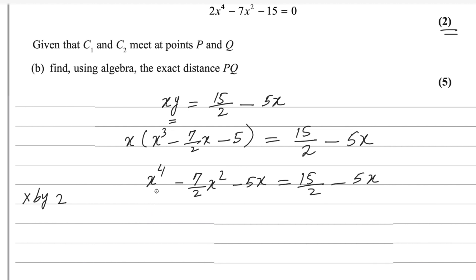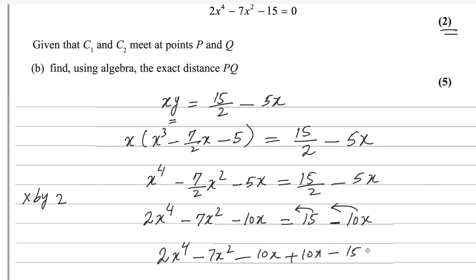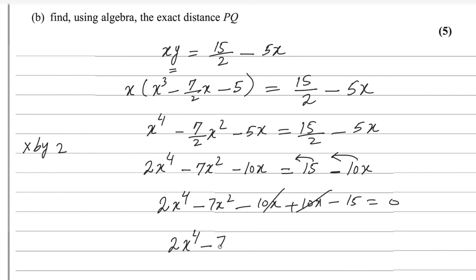Multiply every term by 2. We get 2X⁴; the 2 cancels with the denominator leaving minus 7X²; and minus 5X times 2 gives minus 10X. On the right side, 2 cancels with 2 giving 15, and minus 5X times 2 gives minus 10X. Bringing all terms to the left: 2X⁴ minus 7X² minus 10X plus 10X minus 15. The 10X terms cancel, and we get the required result: 2X⁴ minus 7X² minus 15 equals 0.